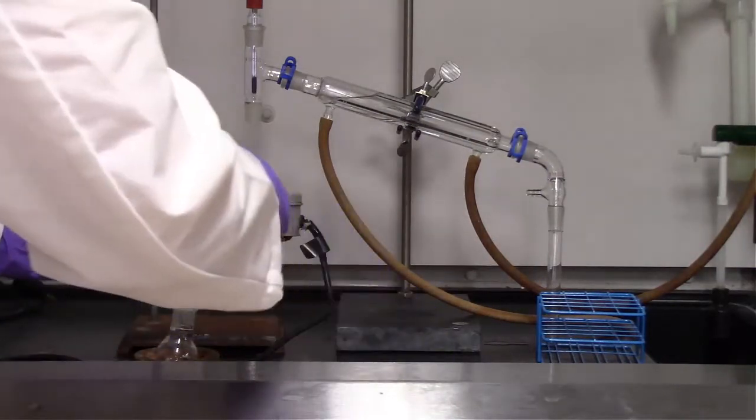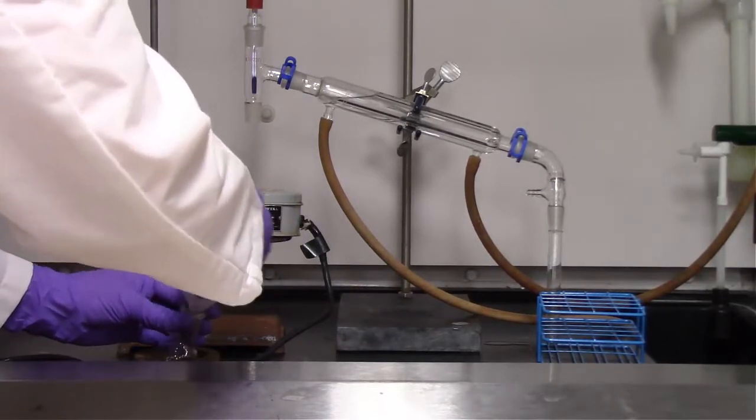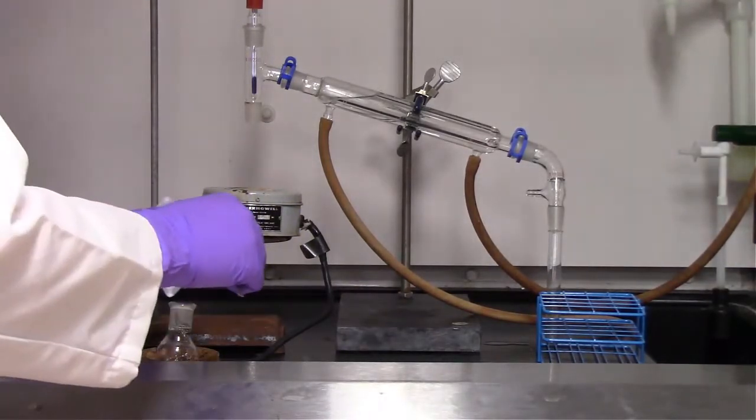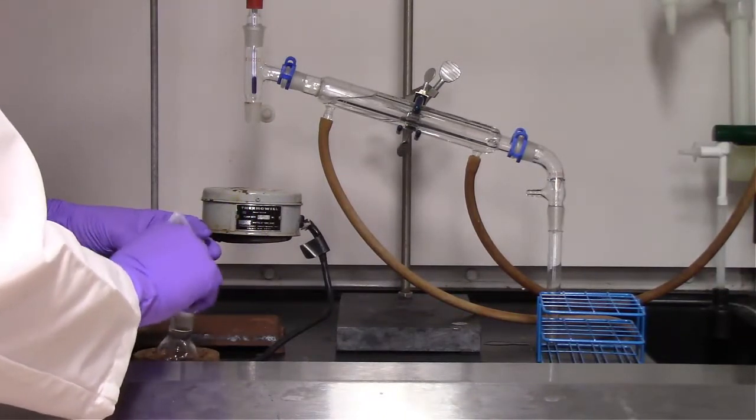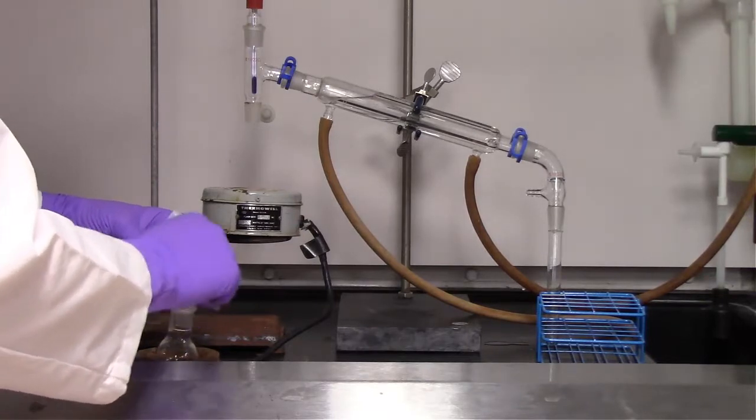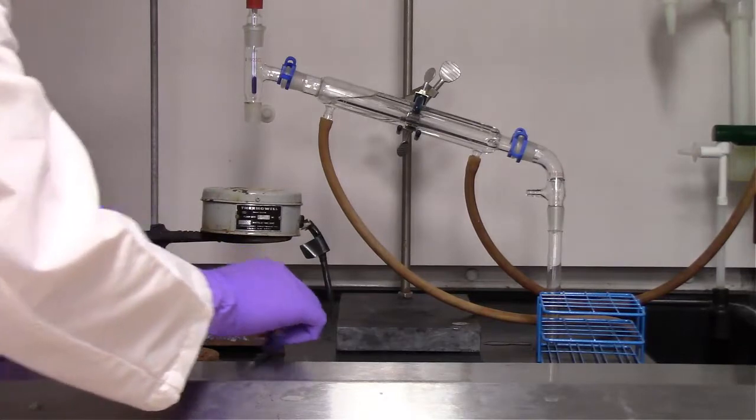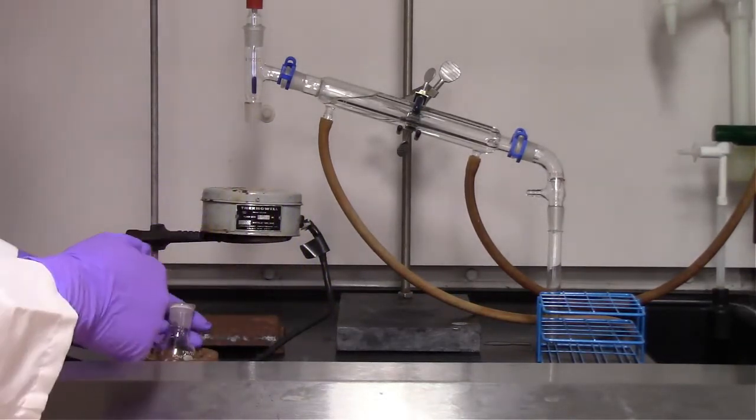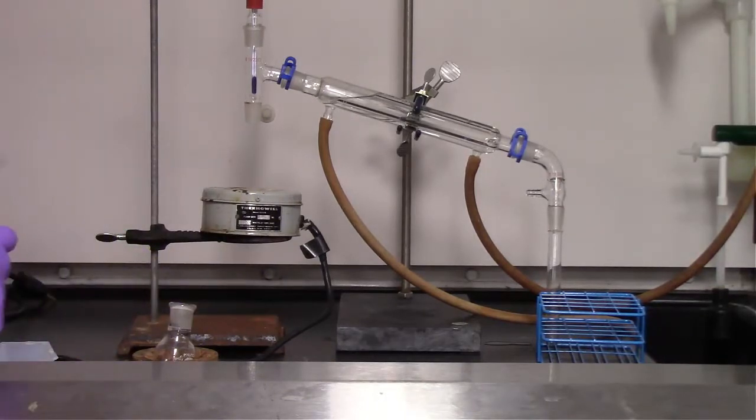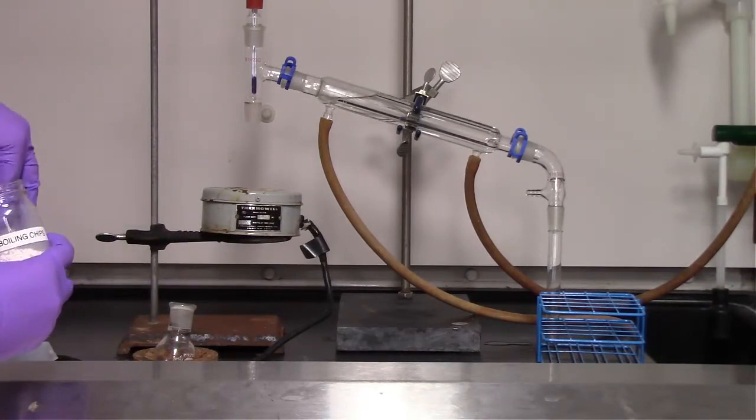And now we need to add our Amberlyst-15 to the round-bottom flask from that weighboat. That Amberlyst-15 has a static interaction with that weighboat, so it's important to scrape it. You could also use a static electricity gun to minimize that interaction, allowing all those beads of Amberlyst-15 to drop down into the round-bottom flask. Notice that all of the Amberlyst-15 is down inside the round-bottom flask, nothing is stuck to the neck.